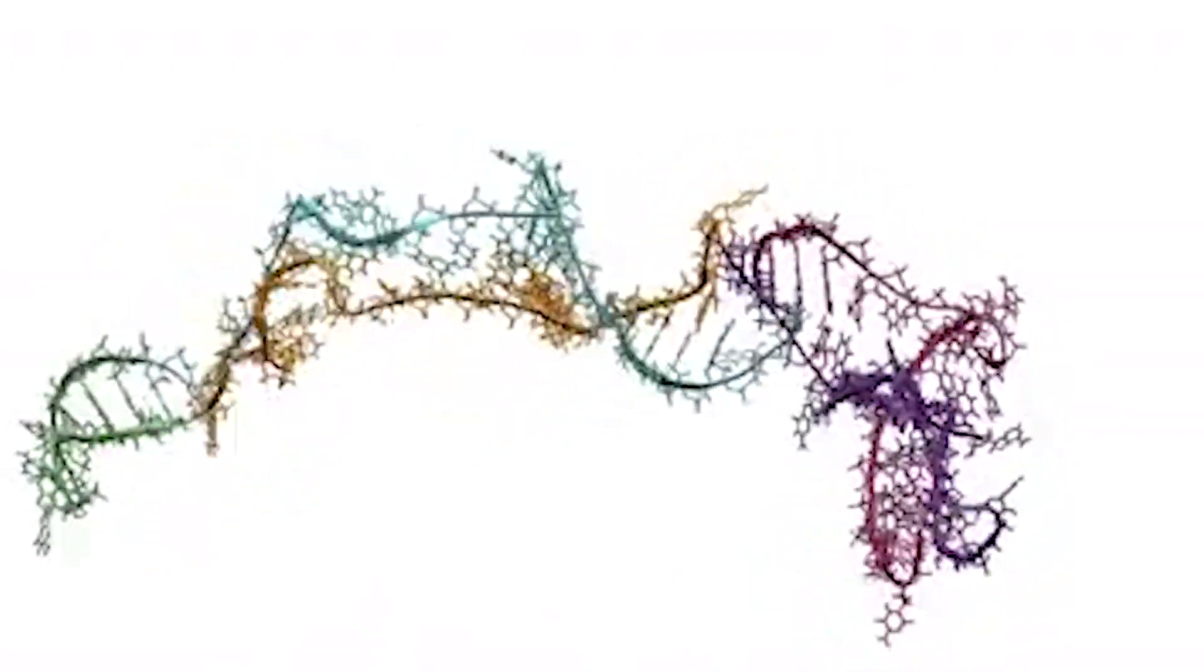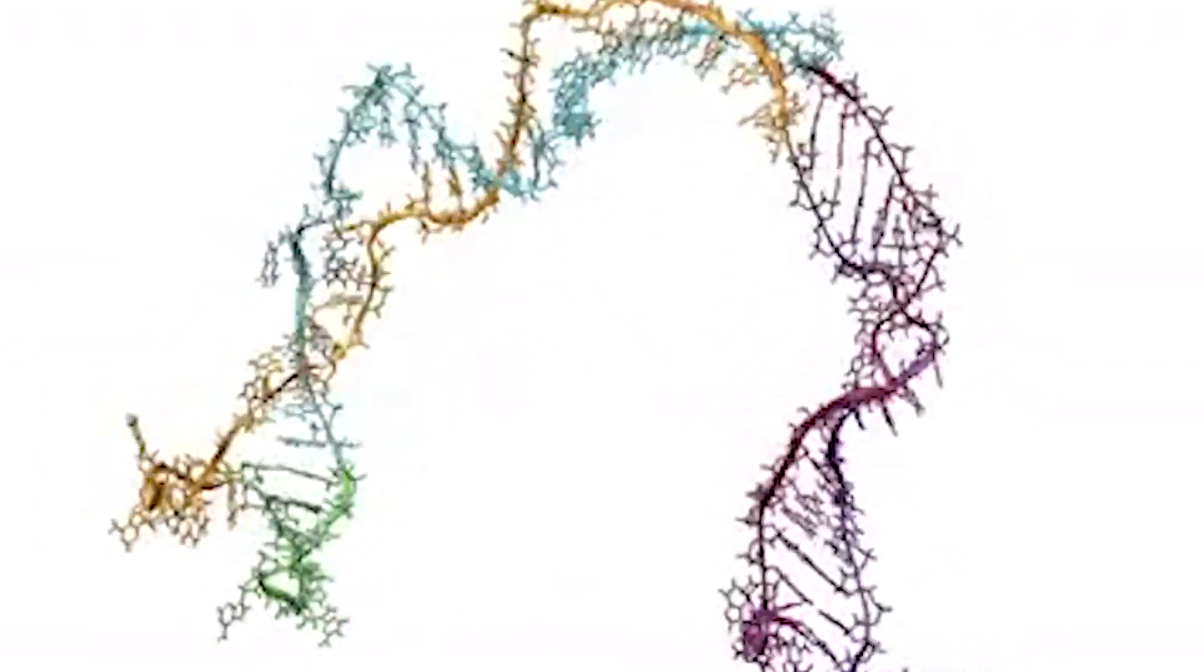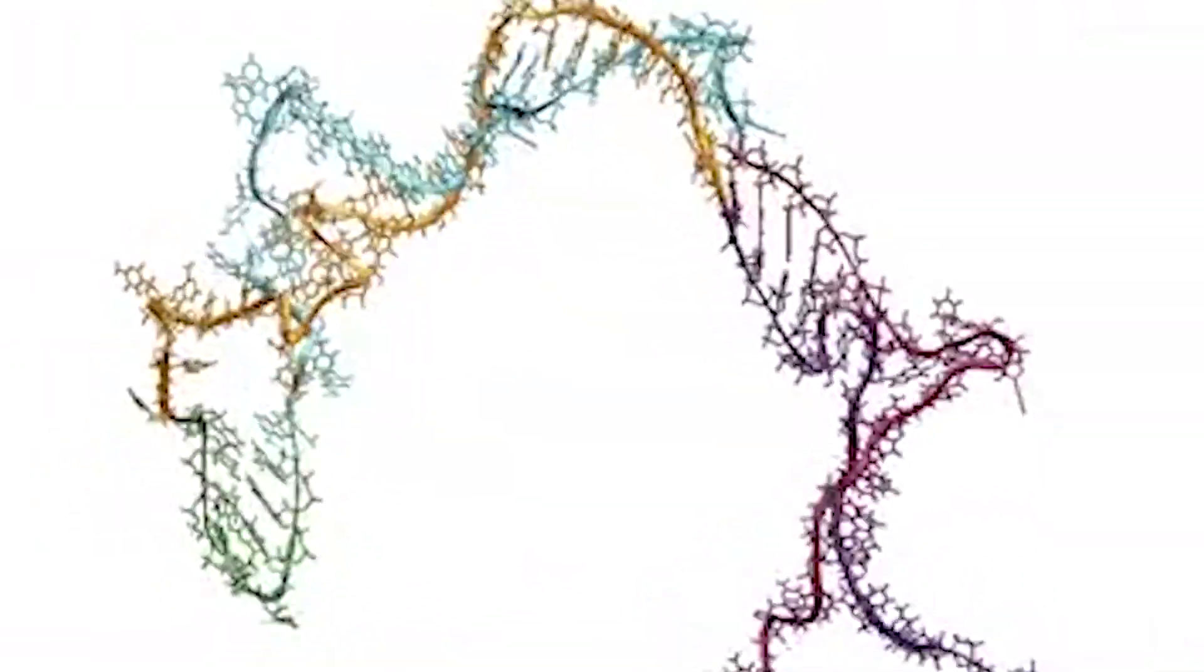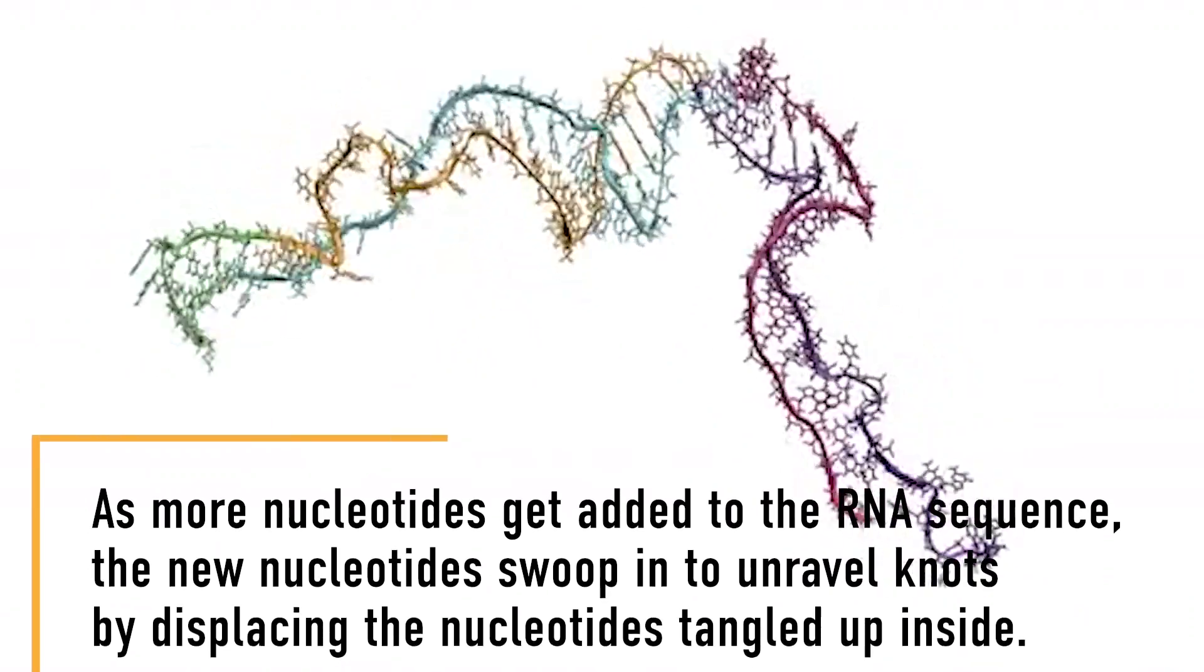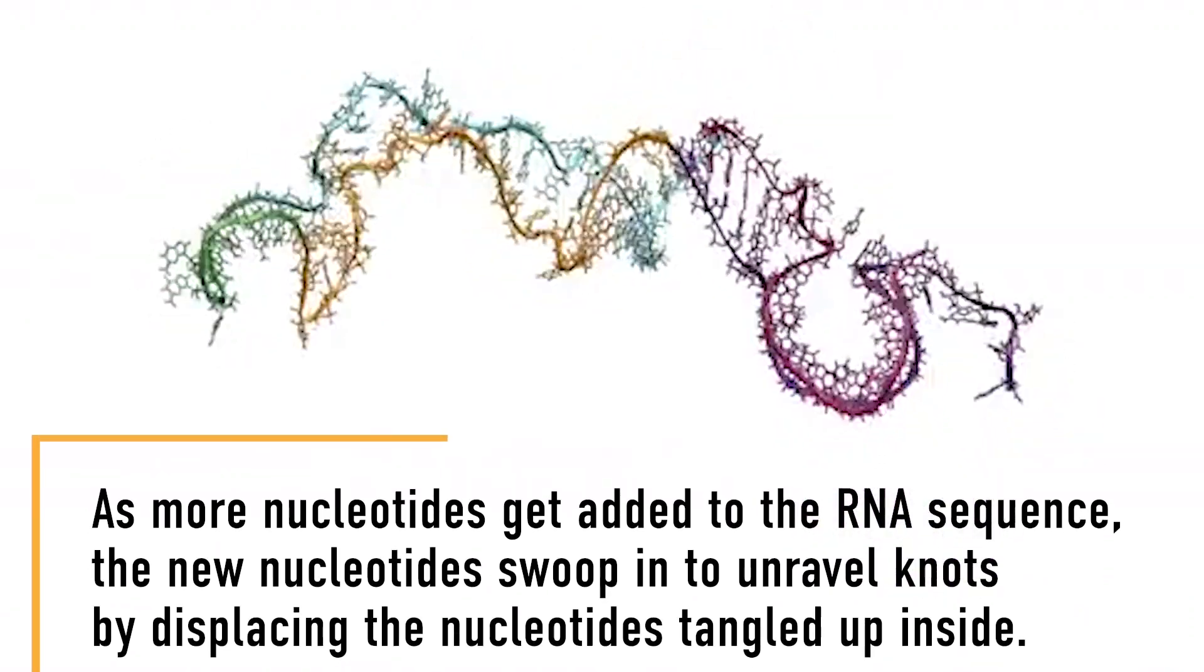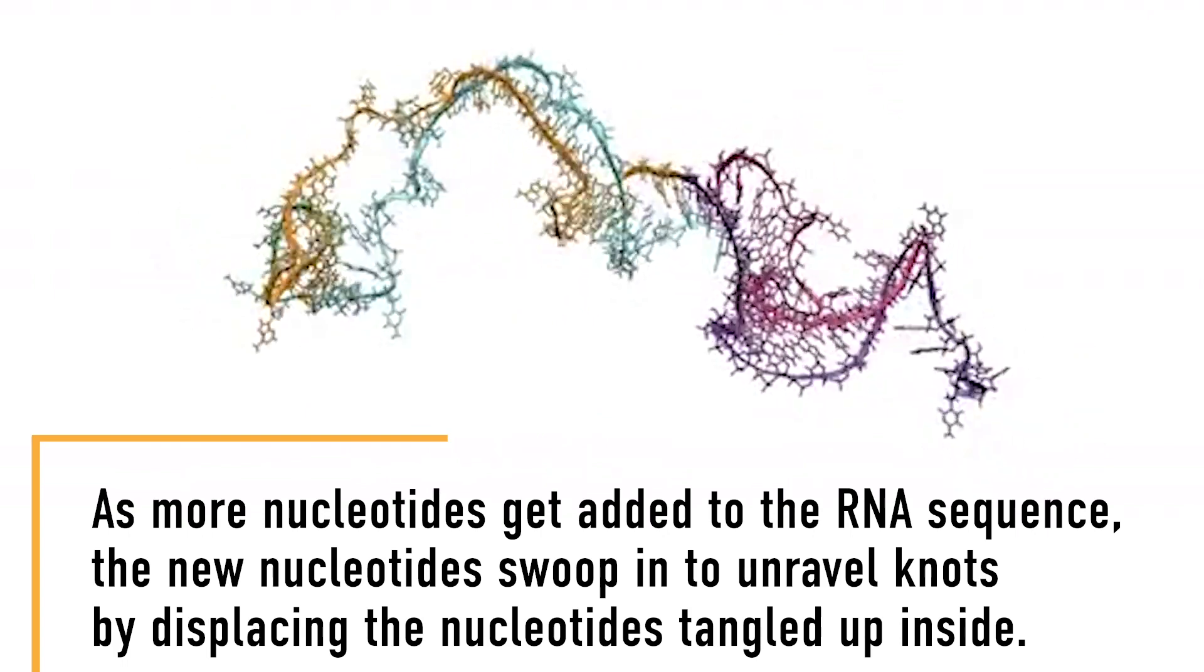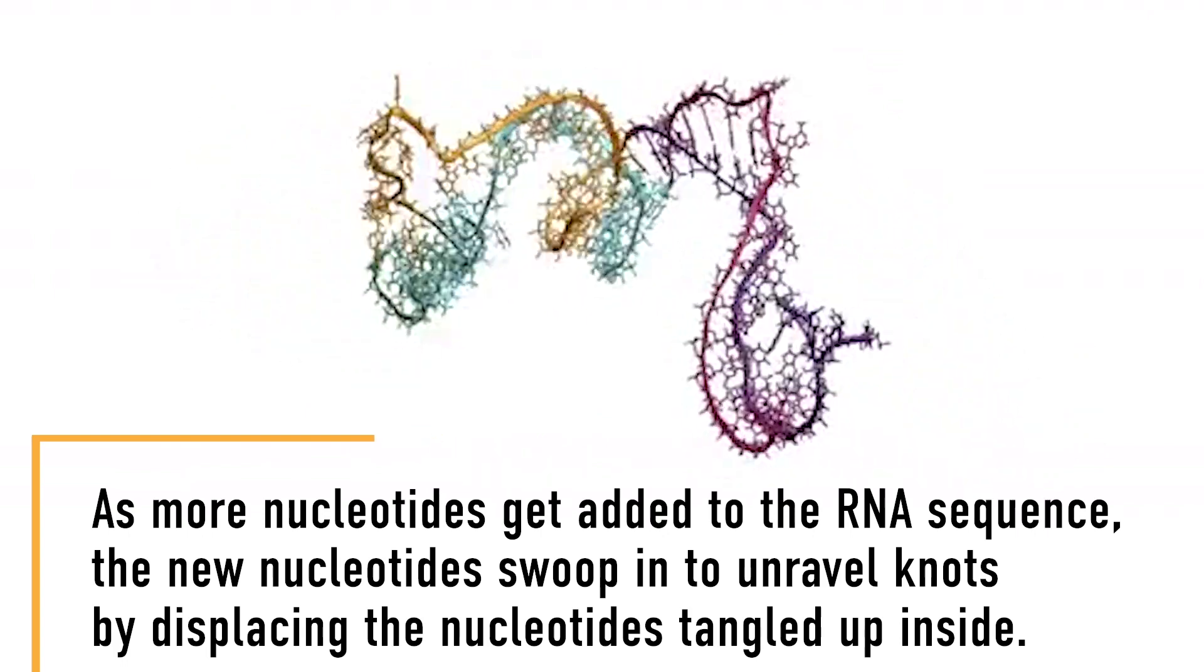In these clips, the dark purple segment of the strand ties itself into one of these knots, and the pink section of the strand then frees it. Basically, as more nucleotides get added to the RNA sequence, the new nucleotides swoop in to unravel knots by displacing the nucleotides tangled up inside them.